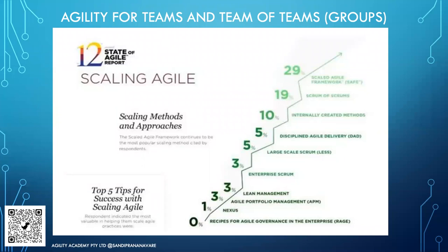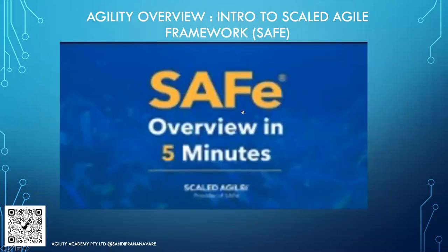According to the 12th State of Agile Report published recently, when it comes to scaling frameworks available in the market, the topmost is SAFe — the Scaled Agile Framework — applied in approximately 29% of organizations surveyed. As a rule of thumb: explore a few team-level frameworks like Scrum and Kanban, then look at one or two group-level frameworks, and then look at Discipline Agile as a whole toolkit to understand what to pick and when to apply it as an agile coach, senior leader, or product owner.